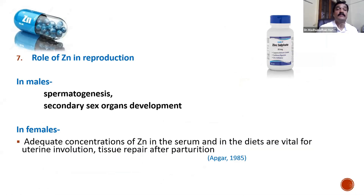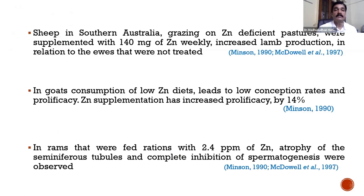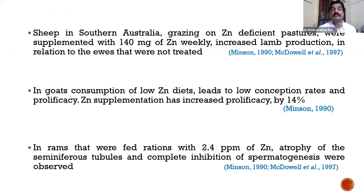Zinc plays a role in reproduction: it is required for normal spermatogenesis and secondary sex organ development. In females, adequate zinc concentration in serum and diet is vital for uterine involution and tissue repair after parturition. Research from Australia found that sheep grazing on zinc-deficient pasture supplemented with 140 mg of zinc weekly showed increased lamb production. Minson in 1990 found that low zinc diets in goats led to low conception rates and prolificacy, with zinc supplementation increasing prolificacy by 14 percent.